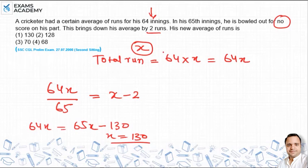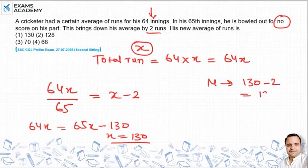The initial average x is 130. Since the average decreased by 2, the new average is 130 minus 2, which equals 128. The new average is 128. This is option 2 — the answer to the question.